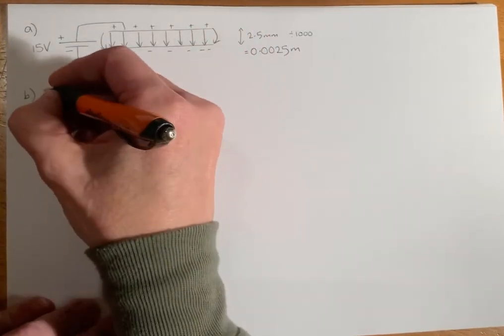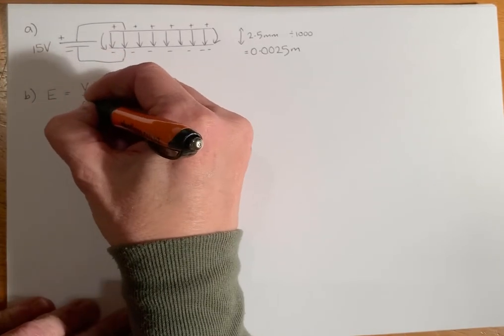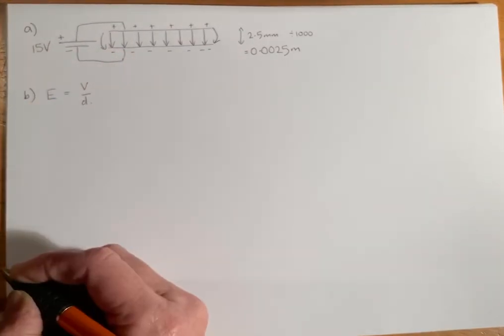Part B: calculate the electric field strength. In this case, we're going to need to use voltage divided by distance.